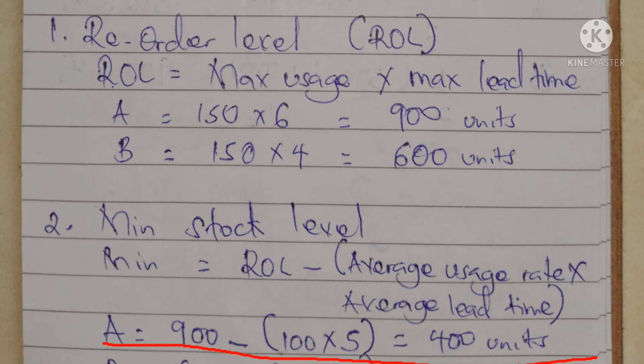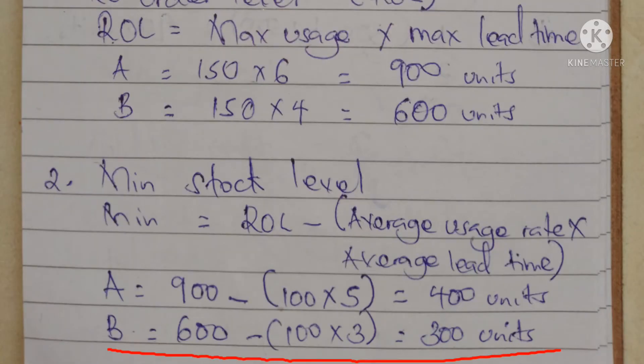We subtract (average usage times average lead time) from the reorder level. The average usage was 100 units per week. Product A had a lead time of four to six weeks, so the average lead time is five weeks. So it's 900 minus (100 times 5) which gives us a minimum stock level of 400 units for product A.